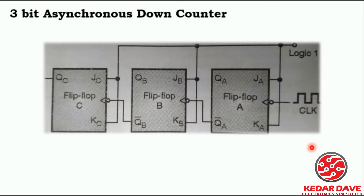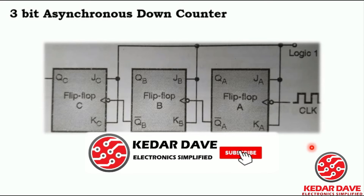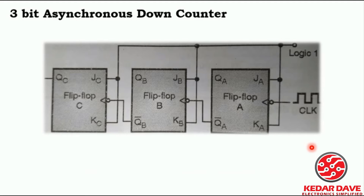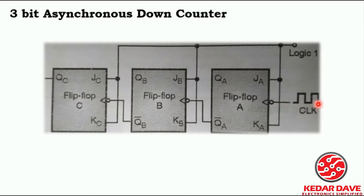Welcome to the lecture series of digital electronics. In this session we are going to discuss the 3-bit asynchronous down counter. You can learn how the down counter will work and its operation. Here you can see that we have taken the clock, and for the first flip-flop only we are providing the clock. We have taken the JK flip-flop over here.